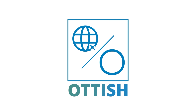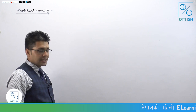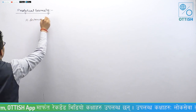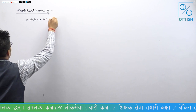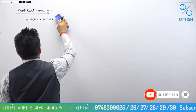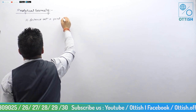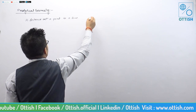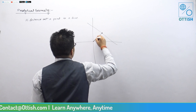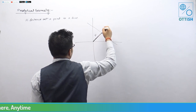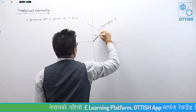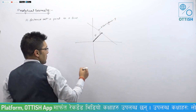Welcome to Otis.com — learn anywhere, anytime. Today we will find the distance between a point and a line. The perpendicular distance from the origin to a line is a unique value. The line is given in normal form as x cos α plus y sin α is equal to p.